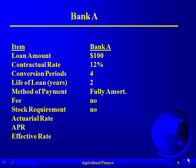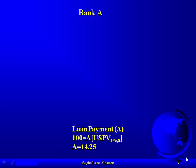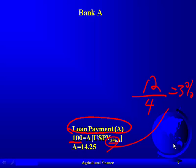Looking at Bank A: the conversion period is four, meaning four payments per year — quarterly payments over this two-year period. It's fully amortized, no fee, no stock requirements, no compensating balances, no non-interest costs. The first thing we do is calculate the loan payment. It's a $100 loan with quarterly payments — if the annual contractual rate is 12%, you divide by four to get the 3% quarterly rate. With two years multiplied by four, you get eight periods.